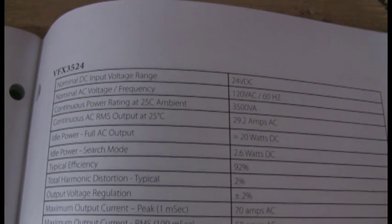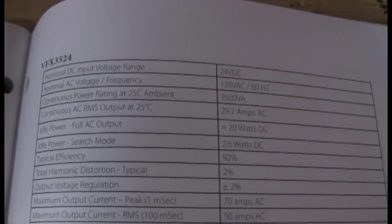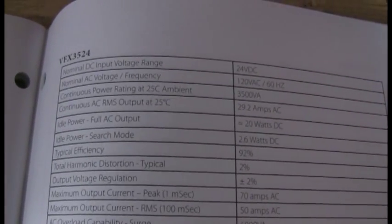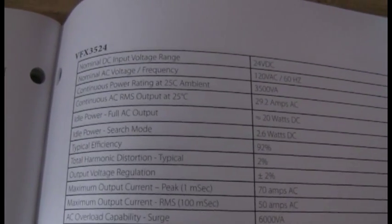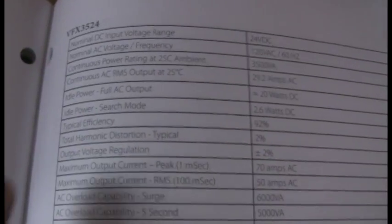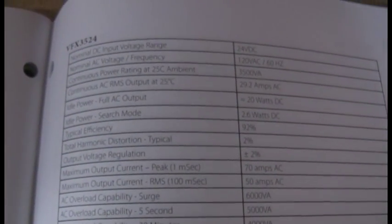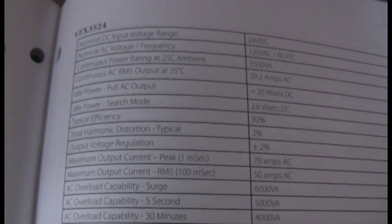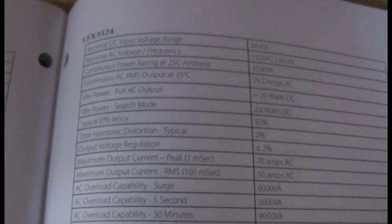Continuous power rating at 25 degrees Celsius ambient is 3500 volt-amps, which basically means 3500 watts or 3.5 kilowatts continuous. That's occurring at about 29.2 amps on the AC side. An interesting one is idle power—how much the unit consumes when standing by.